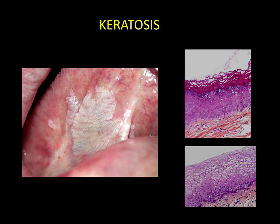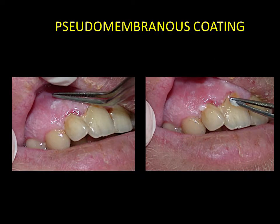This keratosis is orthokeratotic or parakeratotic. Keratosis must be distinguished from a pseudomembranous coating. Pseudomembranous coatings are deposited on the mucosa; they can be detached, and are most frequently caused by excessive desquamation or fungal proliferation.